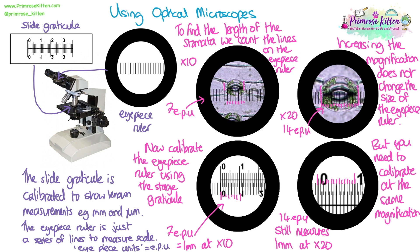We can then calibrate our eyepiece ruler: if one millimetre equals seven eyepiece units, then each line is 0.14 millimetres. That means once calibrated, you can measure multiple stomata using eyepiece units and convert them — for example, 10 eyepiece units would be 1.4 millimetres. If you need to calculate the average length of a stomata, you'd have to measure multiple stomata in your field of view and then calculate an average.